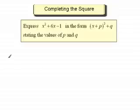So we start off by writing the quadratic expression, in this case x squared plus 6x minus 1. And because we have to write it in this style, I start off by writing an open bracket.